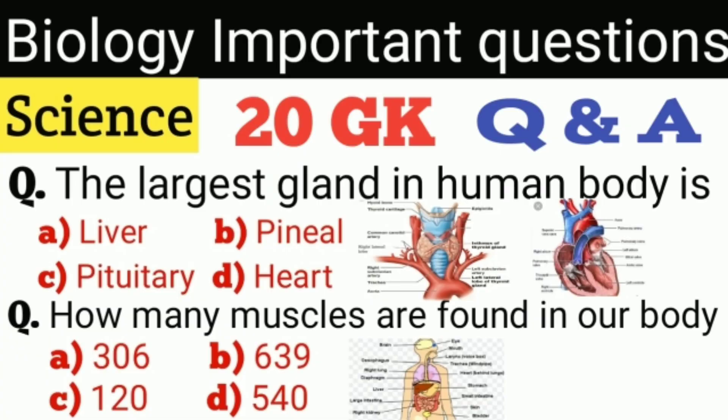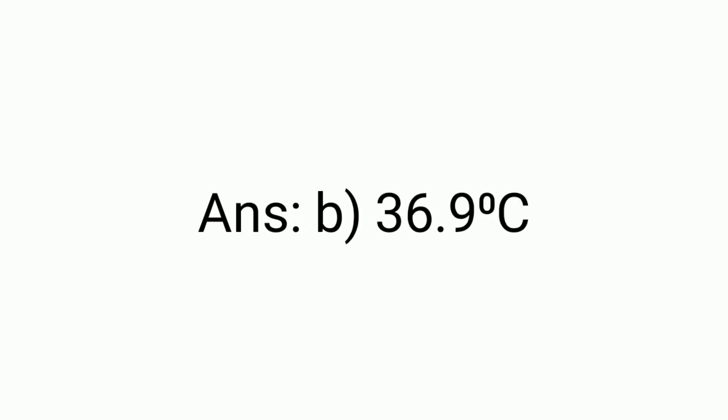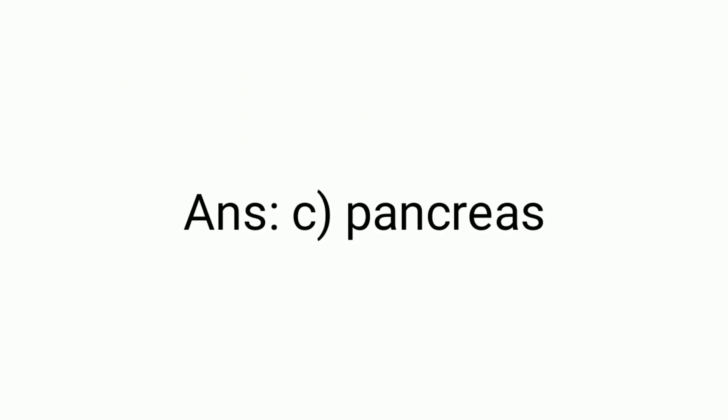Hello friends, welcome to my channel RHGK. Today we are going to discuss important questions of science, the part of biology. Question number one: The normal temperature of human body is a) 42.5 degrees Celsius, b) 36.9 degrees Celsius, c) 98.4 degrees Celsius, d) 82.2 degrees Celsius. Answer is B. Question number two: Insulin is secreted by a) liver, b) thyroid gland, c) pancreas, d) none of above. Answer is C, pancreas.